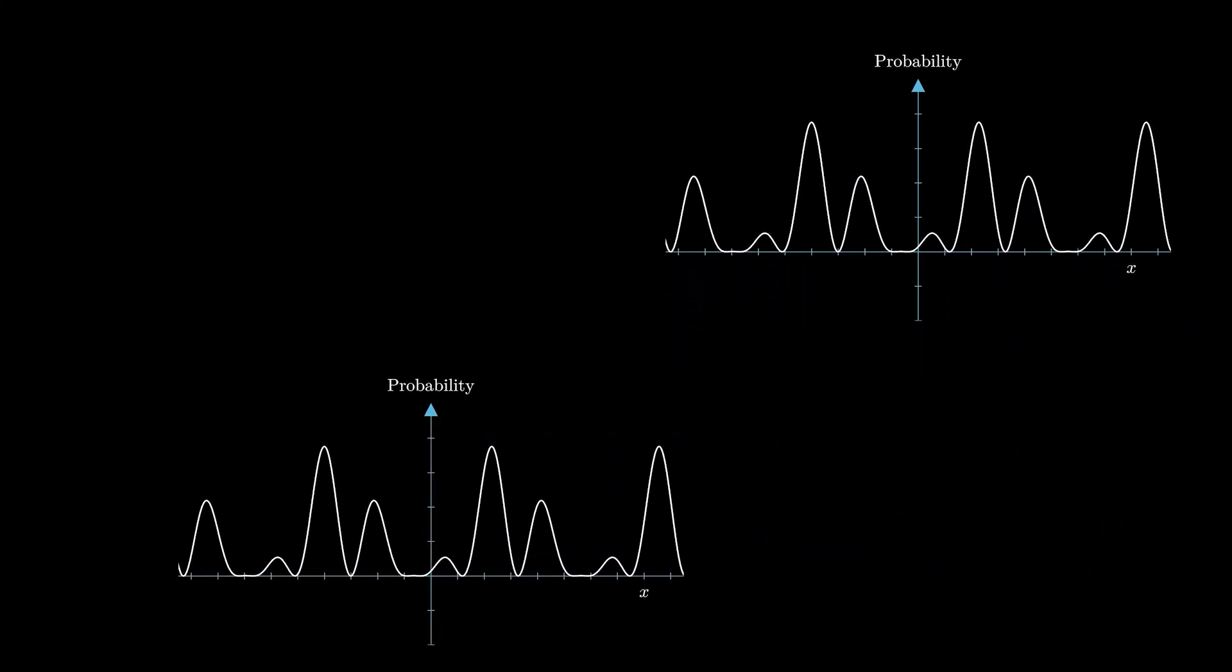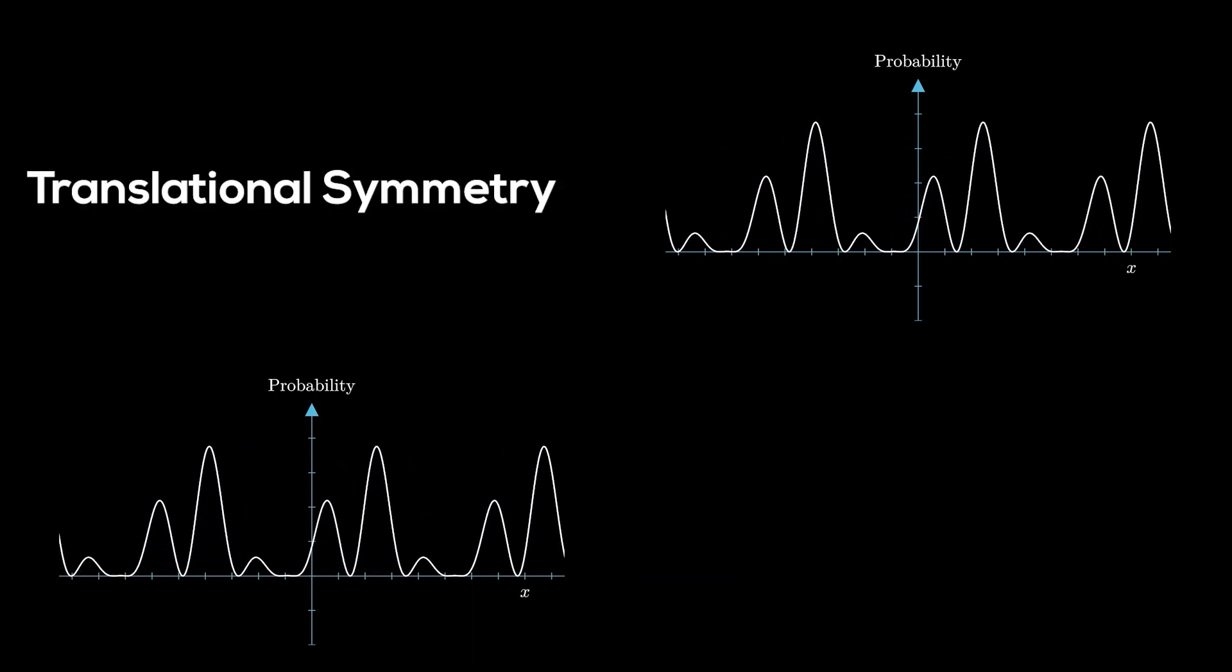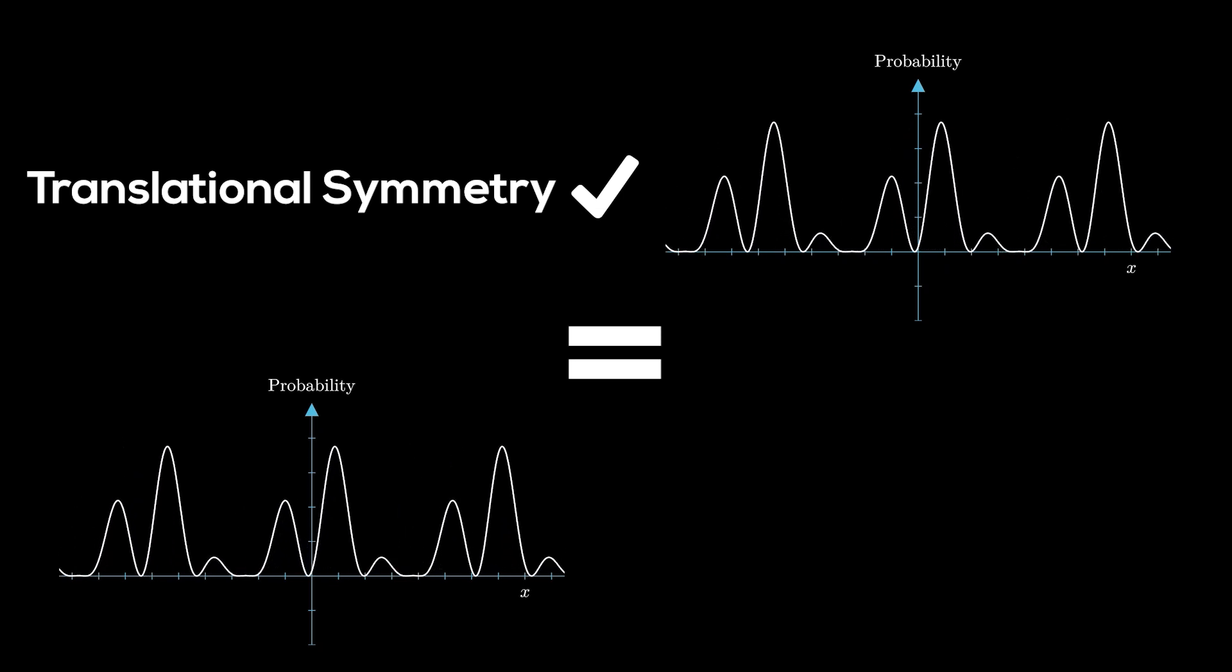Here the symmetries are observed as such. Say we have a wave function, and we translate this to here. We would say this wave function has translational symmetry if, even after the translation, it changes the same way over time. Basically, it experiences the same time evolution.